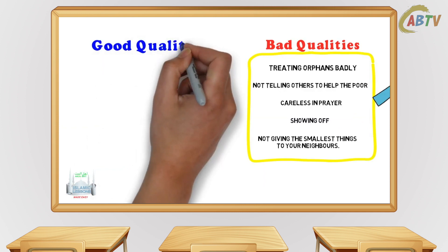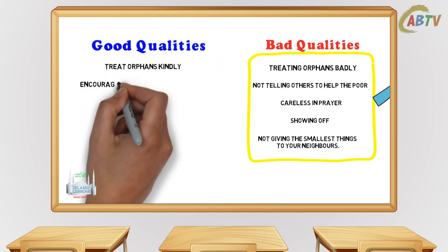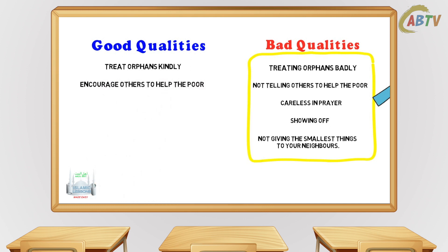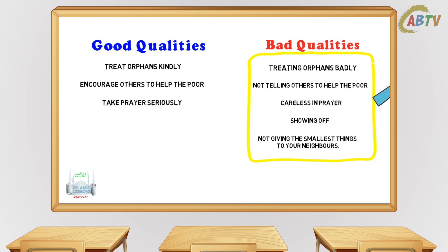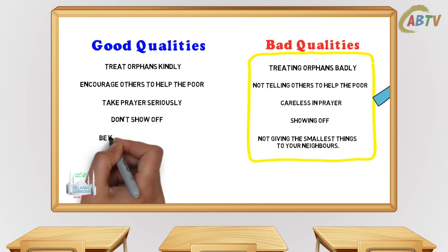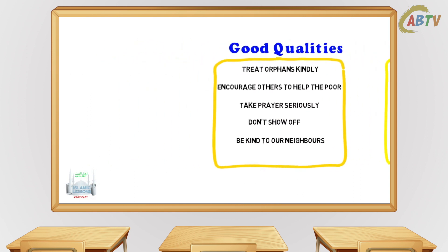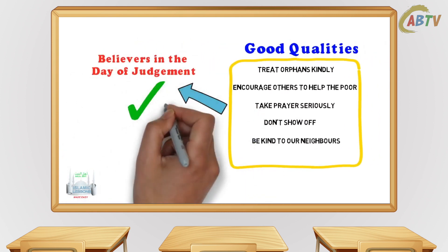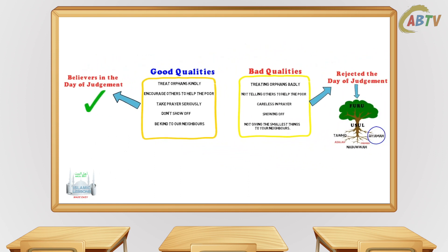So this surah is teaching us that we should treat the orphans kindly. If we can't afford to help the poor, we should encourage others to help the poor. We should take our prayer seriously for the sake of Allah only, not to show off. We should be kind to our neighbors and give them even the smallest things if they need it. And if we do these things sincerely for the sake of Allah, we can truly say we believe in a Day of Judgment. And hopefully we will see our rewards on this day, insha'Allah.